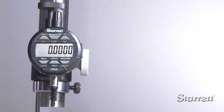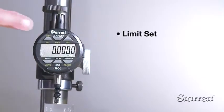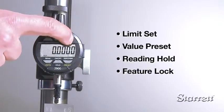The six button 2900-4 and 6 models have a limit set, value preset, reading hold and feature lock.